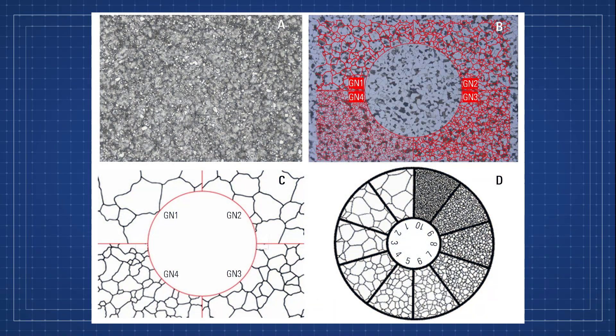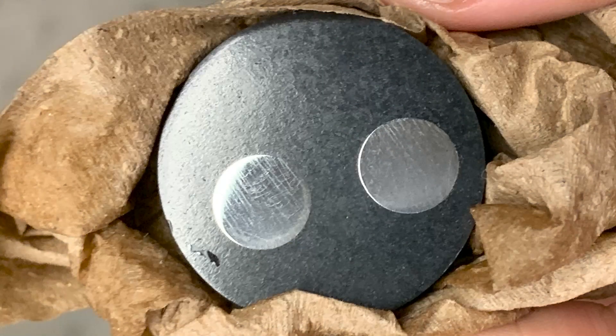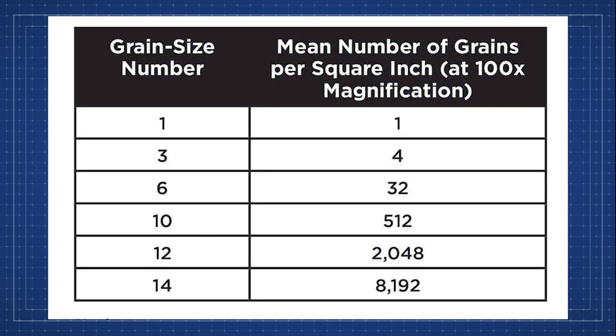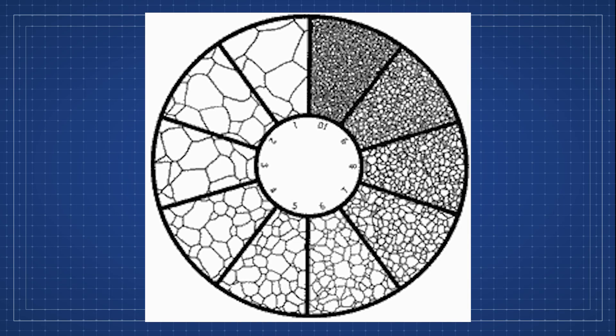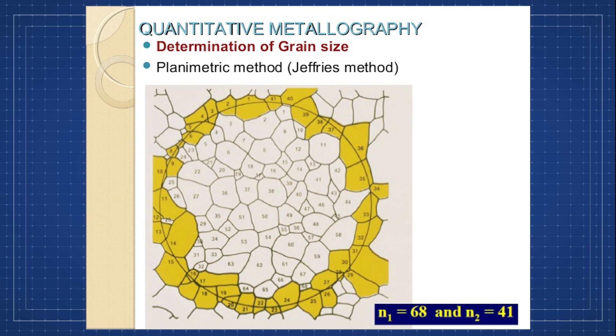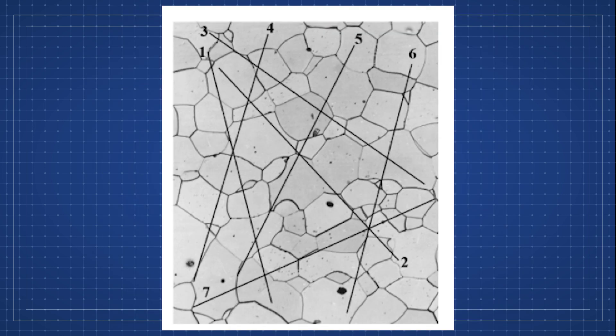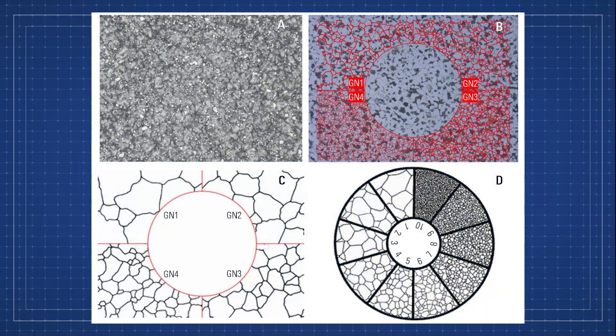There are a number of methods for determining the average grain size in a polished and etched metallographic specimen. You have the ASTM grain size, direct comparison with standards, measurement of average grain diameter, the Jeffries method, and the alternative method. Each one has its own advantages and disadvantages, but you can use these five methods to measure the grain size of any metal sample given.